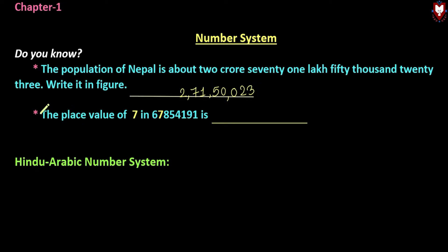Now there is another question: the place value of 7 in 6,78,54,191. The yellow color represents the number 7. We need to discuss what place value it holds. We can discuss what face value and place value mean in the Hindu Arabic system.